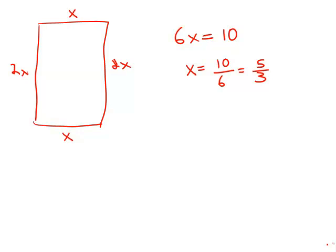That's the width of the window. And then the length of the window, 2x, would be 10 thirds. So it's 5 thirds by 10 thirds, answer choice B.